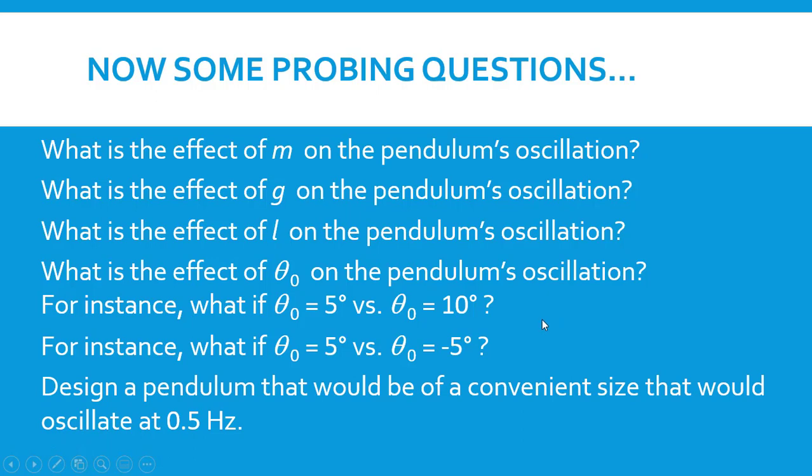So design a pendulum that would be of a convenient size, what I mean by that is one that maybe we could set up in a lab, that would oscillate at 0.5 hertz. Now, what you need to get used to, the hertz measurement—that's one cycle per second. So what this would mean is that in one second, we would go through half a cycle. Is that correct? Well, we go through one cycle per second. I believe that that's the case. We'll work this out. That would mean in two seconds, we would go through the entire cycle.